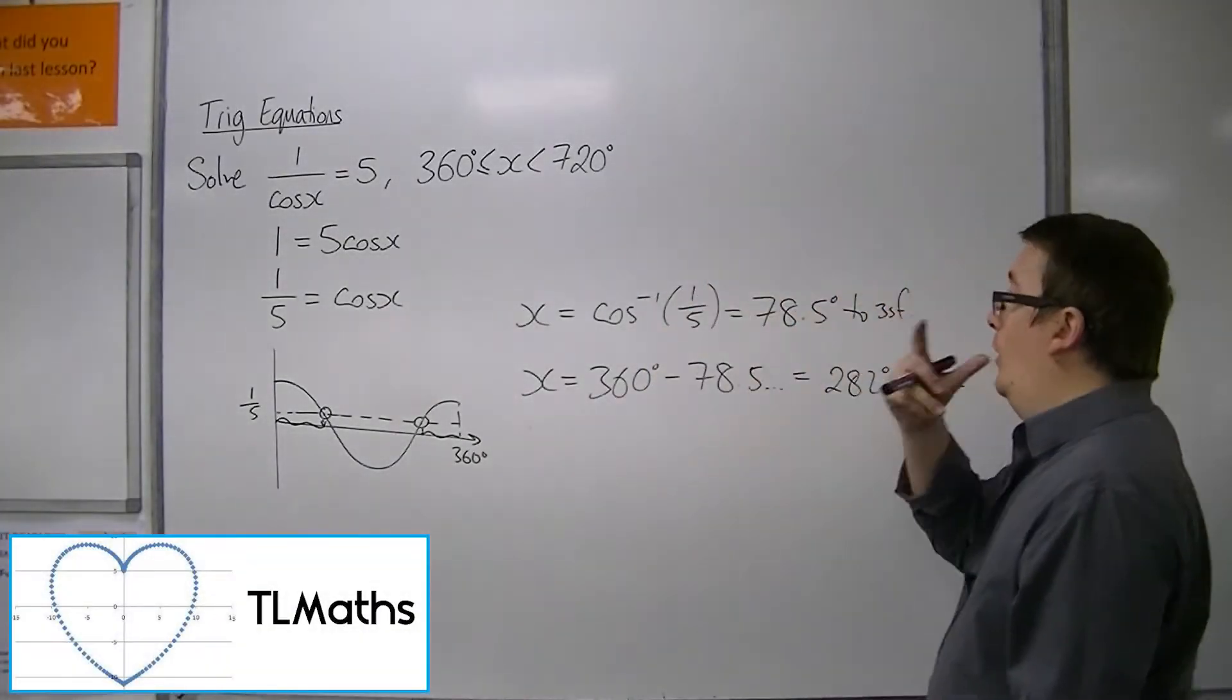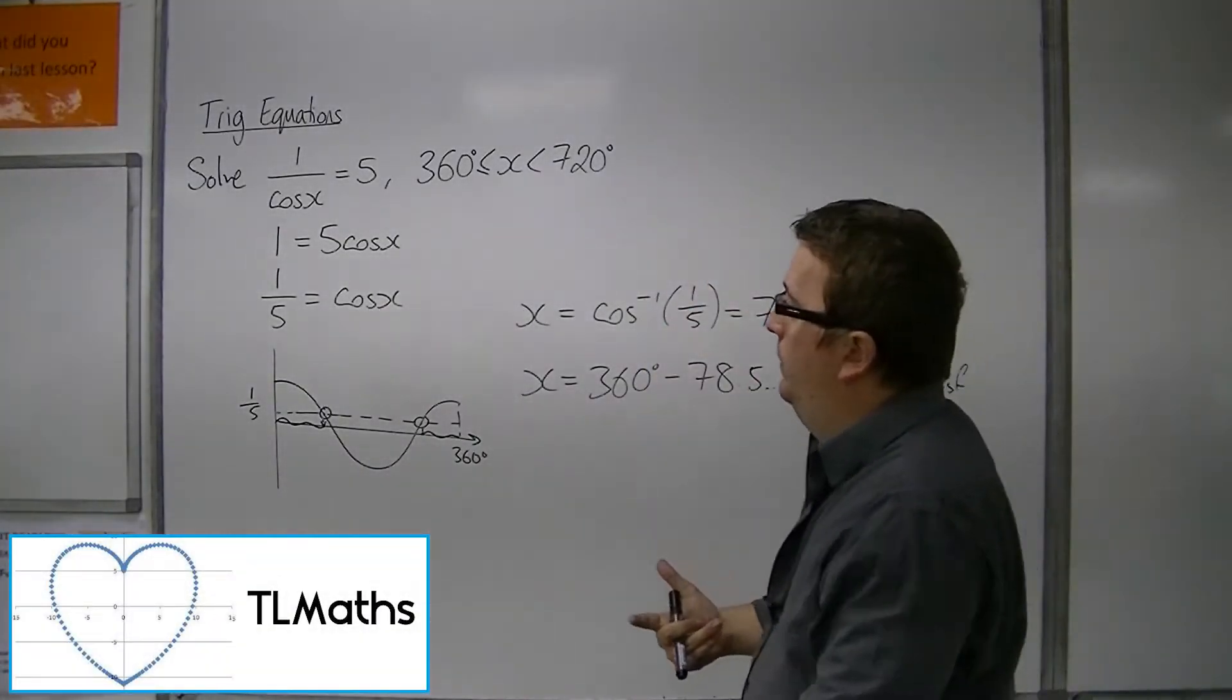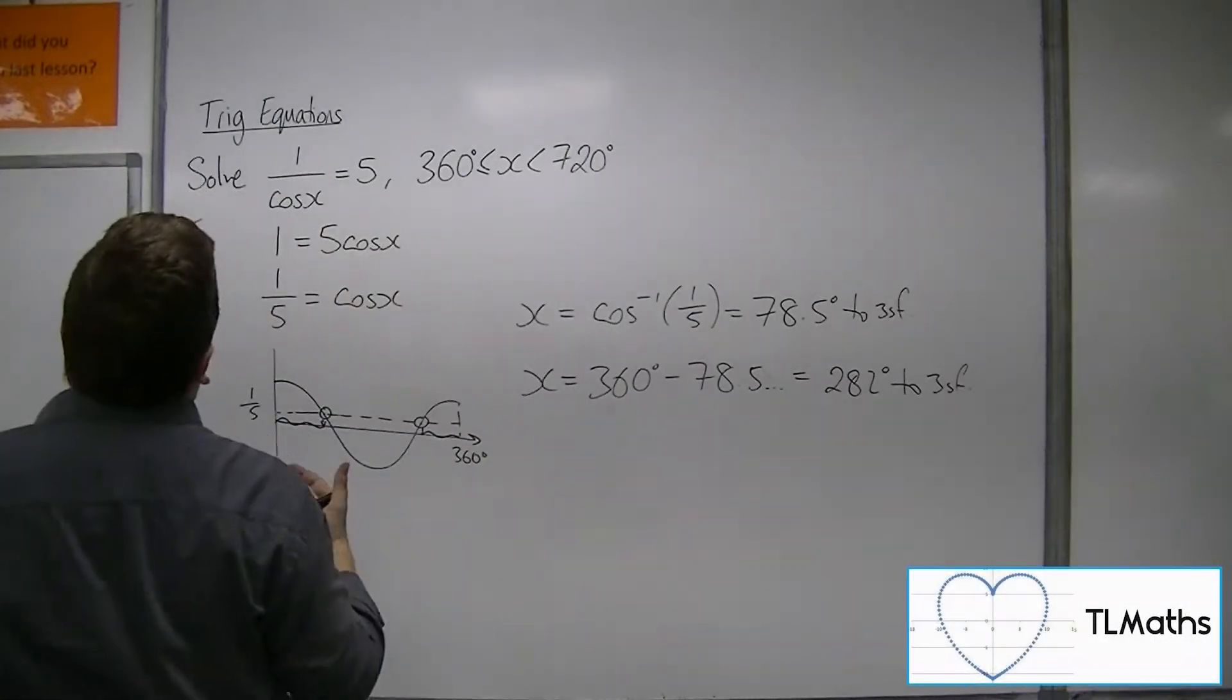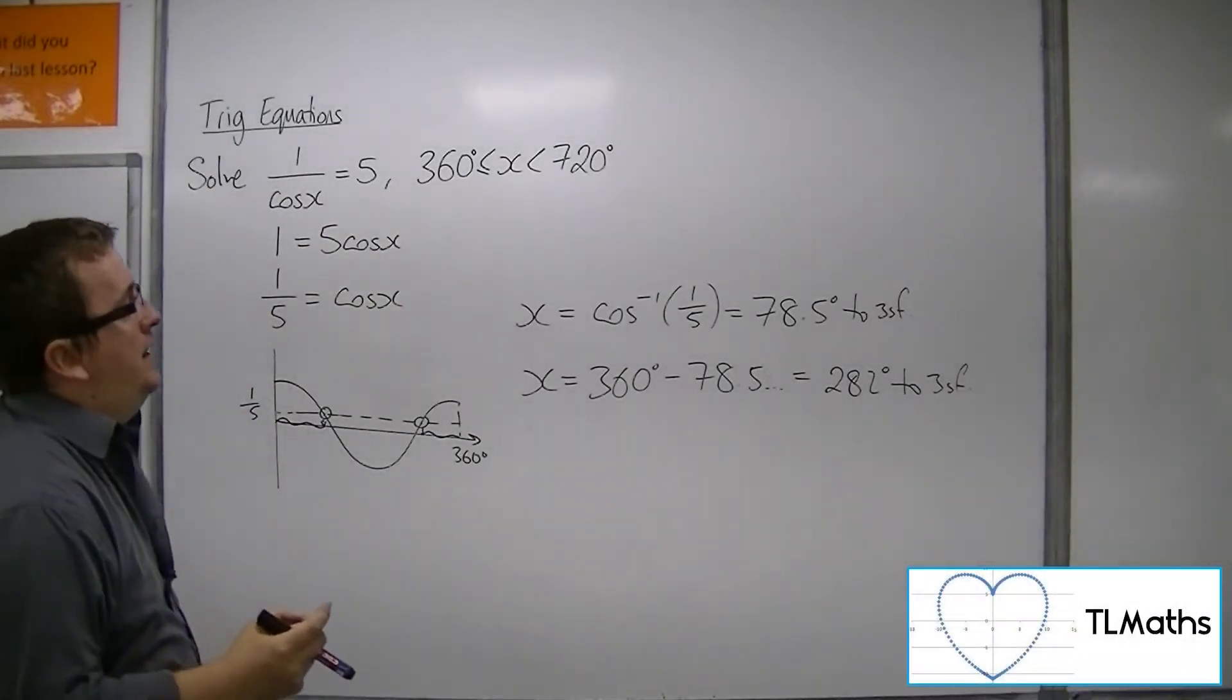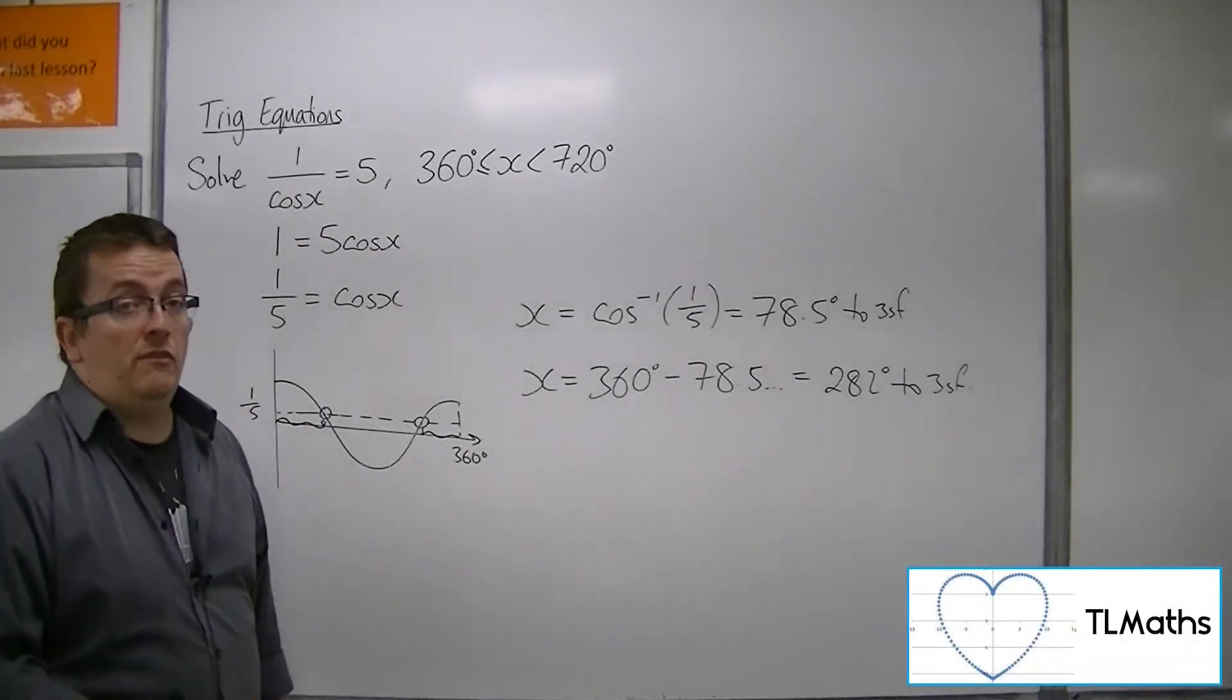Okay, so now I've changed the problem. It's still 1 over cos x equals 5, but we're now looking at the solutions between 360 and 720.